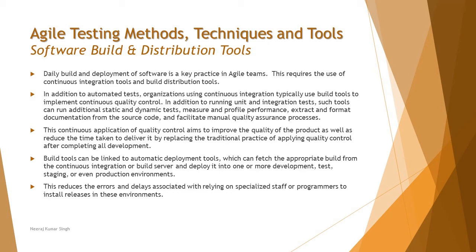You don't have to wait for all units to be developed before starting integration, which was the traditional approach. In Agile, we do it simultaneously and follow principles like 'fix bug first' — meaning before moving to the next iteration you clear all bugs from the previous one. Build tools can be linked to automatic deployment tools which fetch the appropriate build from the continuous integration or build server and deploy it into one or more development, test, staging, or even production environments.